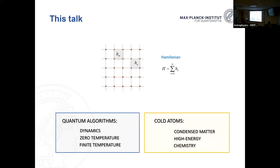I will tell you what kind of problems you can simulate with cold atoms in optical lattices — from condensed matter physics to high-energy physics to quantum chemistry. For the rest of the talk, I will assume we have a problem described in terms of a lattice, which can be one-dimensional, two-dimensional, or higher. We have a given Hamiltonian that is geometrically local — it is a sum of terms, each written on a set of qubits localized in some region.